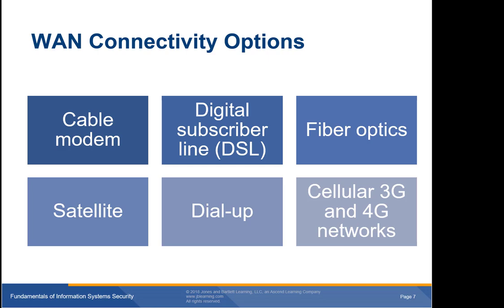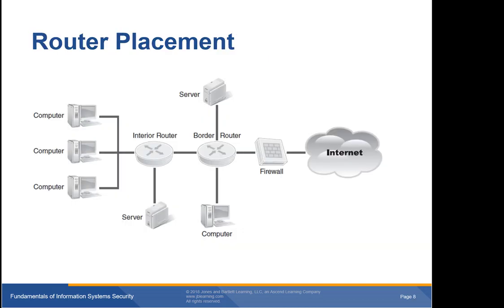The connectivity option you choose will not affect what you can do with your network. The differences relate to the way the signal gets into your building — telephone lines, cable lines, dedicated wires — and the speed and reliability of your service. A router is a device that connects two or more networks and selectively interchanges packages of data between them, connecting a LAN to a WAN by examining network addresses to decide where to send each packet.